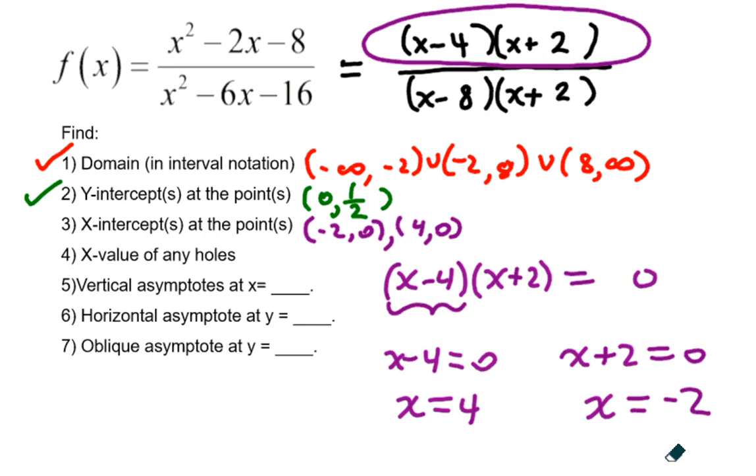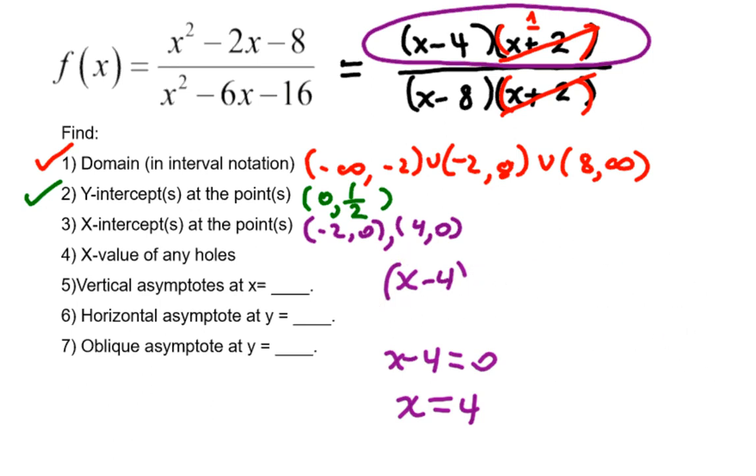The only catch is, if you notice, these two factors on top and bottom, the quantity x plus 2 cancels to 1. So what that means is, is that we're really only interested in x minus 4. So we're going to have just the 1 x-intercept at 4 comma 0.